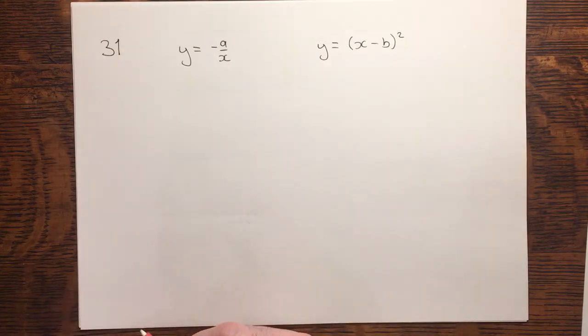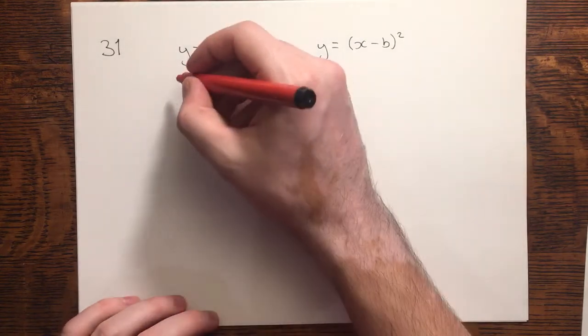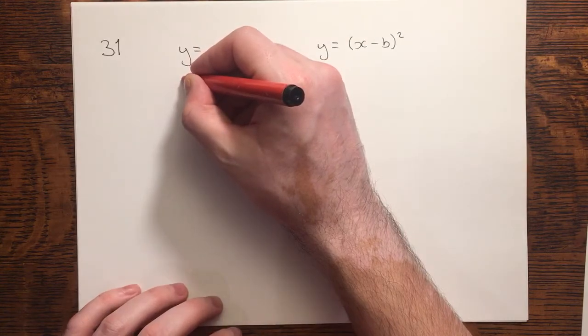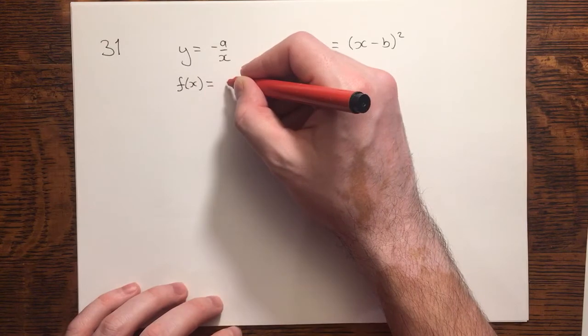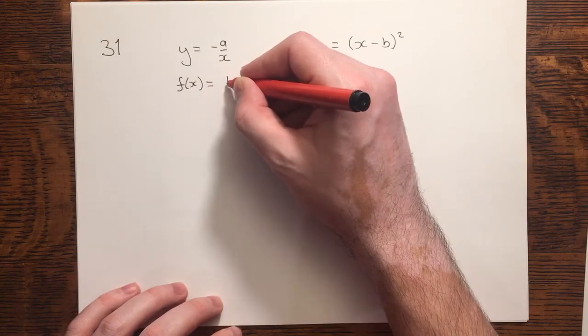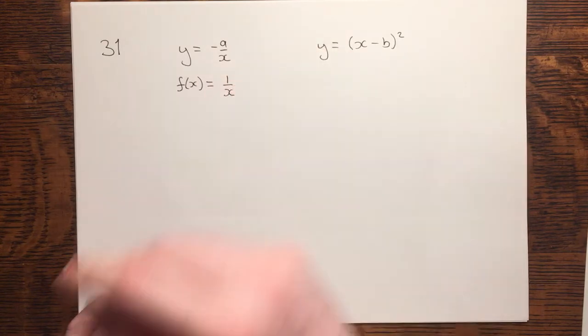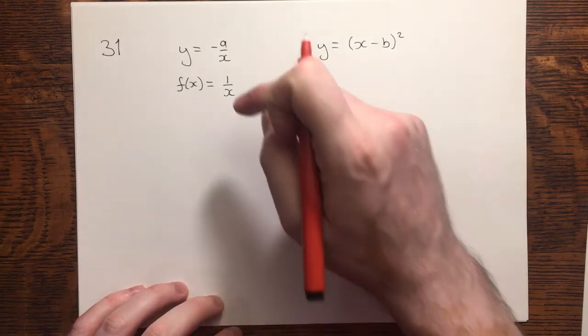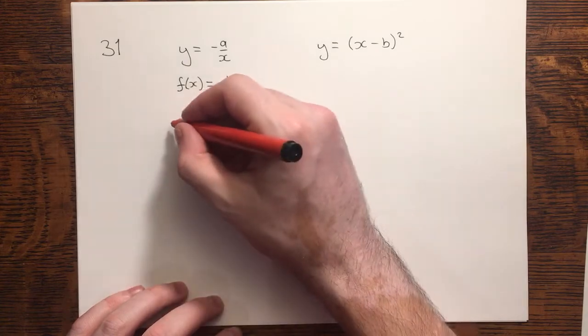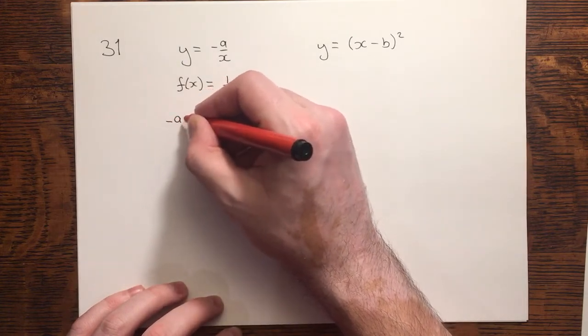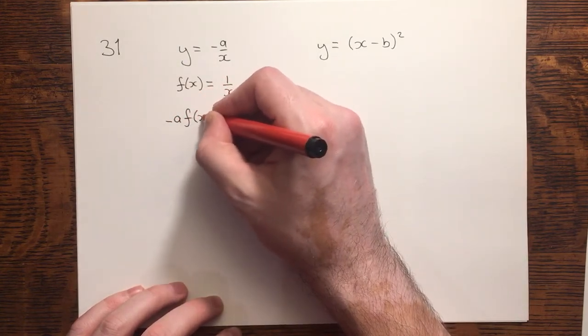I'd like to refer to these as functions because we're going to be sketching. If I call a similar function f of x, how would I transform this into this? It would be minus a f of x.